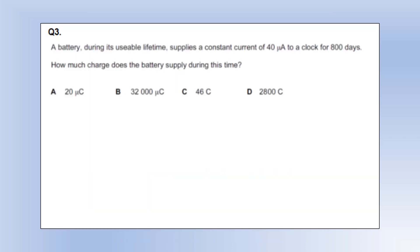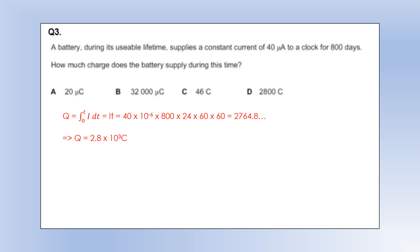A battery during its usable lifetime supplies a constant current of 40 microamps to a clock for 800 days. How much charge has the battery supplied? Using the integral of current with respect to time, we convert to microamps times 10 to the minus 6 and convert days into seconds, giving us our charge in coulombs. Although the battery has emitted that many coulombs, it's also taken in that many on the opposite side, so there's no net change in charge inside the battery.